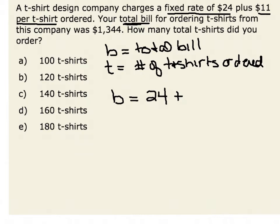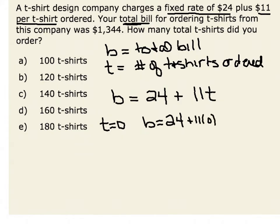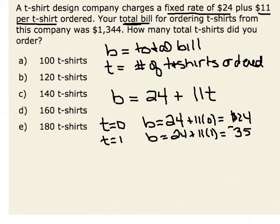Therefore, if we only ordered one t-shirt — when t is equal to 1 — we will be charged an additional $11. Our equation becomes: our total bill is equal to $24 plus 11 times t. If t is equal to 0, then our total bill is $24 plus 11 times 0, which is just our fixed rate. If we order one t-shirt, our bill would be $24 plus 11 times 1, which would result in $35.